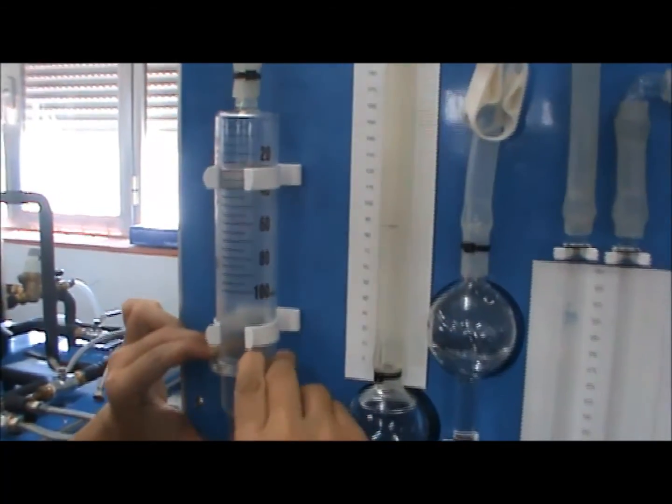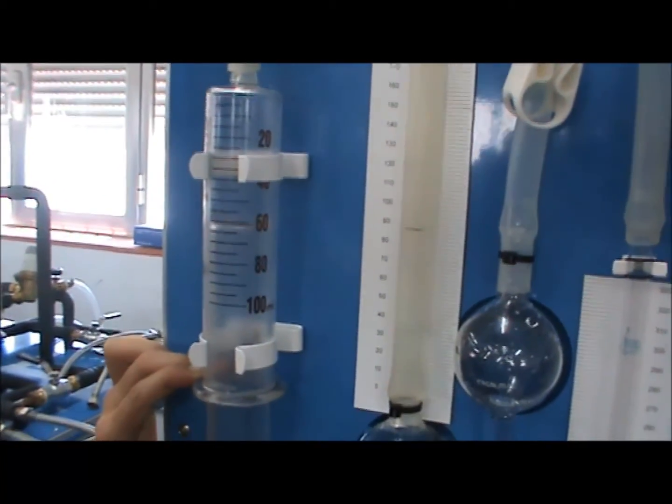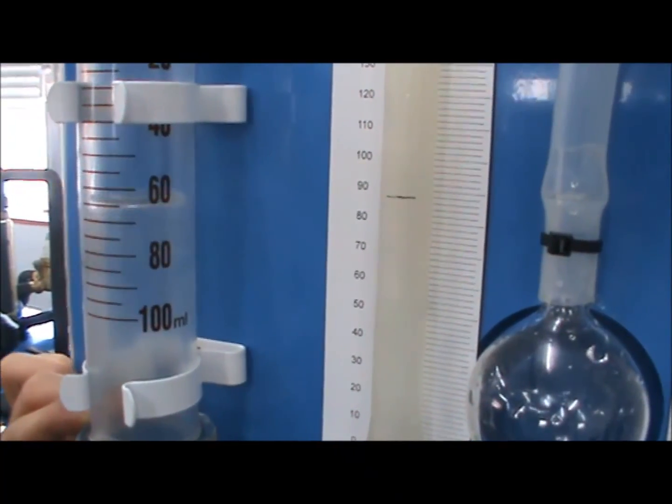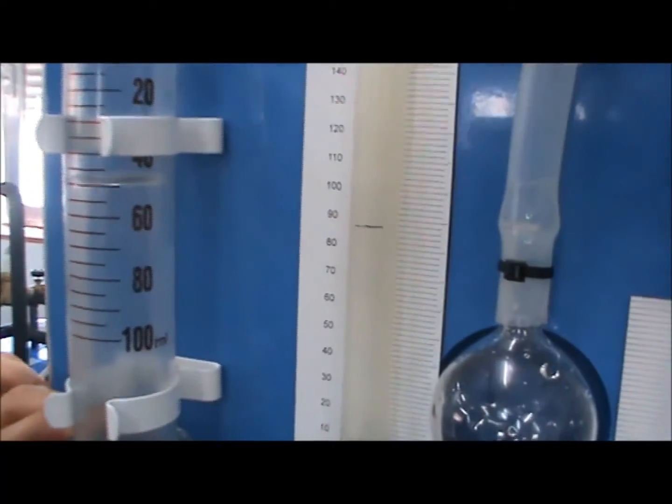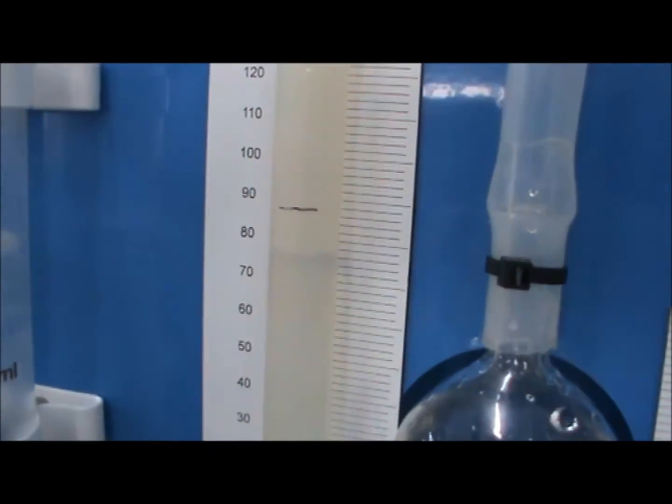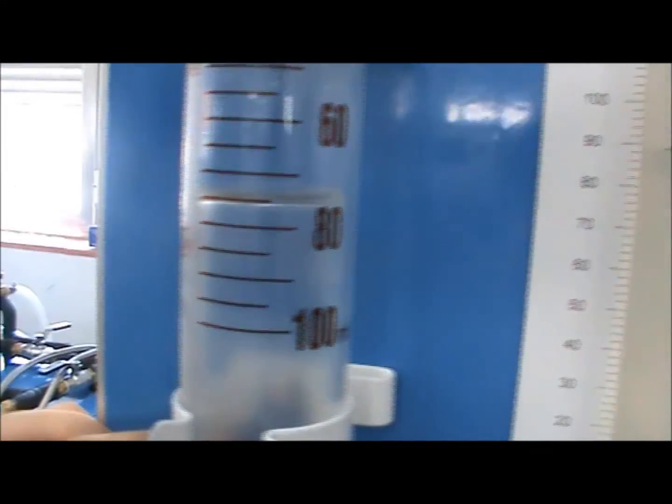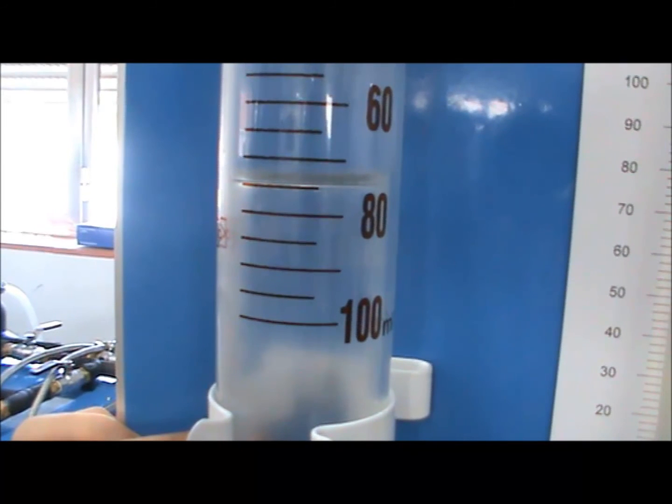Continue this process until you are able to easily compress the plunger, and the volume reduction in the syringe is constant. Now the absorption by the KOH solution is complete. Pull the plunger down to bring the solution to the marked level, and carefully measure the value shown on the syringe. In this experiment, the KOH solution absorbed 25 mL of CO2.